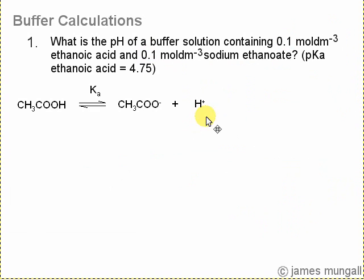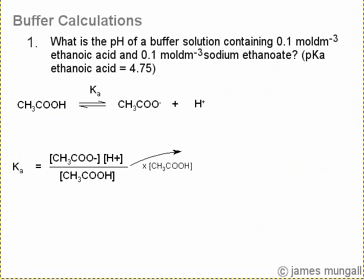Let's work this out. There's just writing out the equilibrium equation again with Ka, which is defined as things on the right over things on the left. Then we're going to multiply both sides by the ethanoic acid, which means Ka times ethanoic acid is H plus times CH3COO minus.